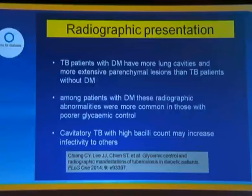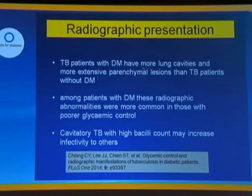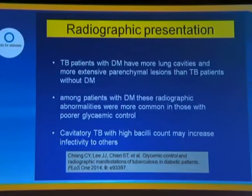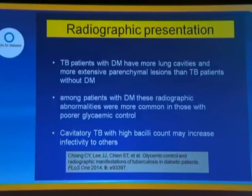This relates to the radiographic presentation. Tuberculosis patients with diabetes, perhaps in response to that immune response, have more lung cavities and more extensive parenchymal lesions. These worsened abnormalities are more common in those with poorer glycemic control — so again, it relates to poor control. And it follows from this that cavitatory TB with a high bacillary count may increase the infectivity of tuberculosis to others, so these patients may be a particular risk in terms of disease transmission.